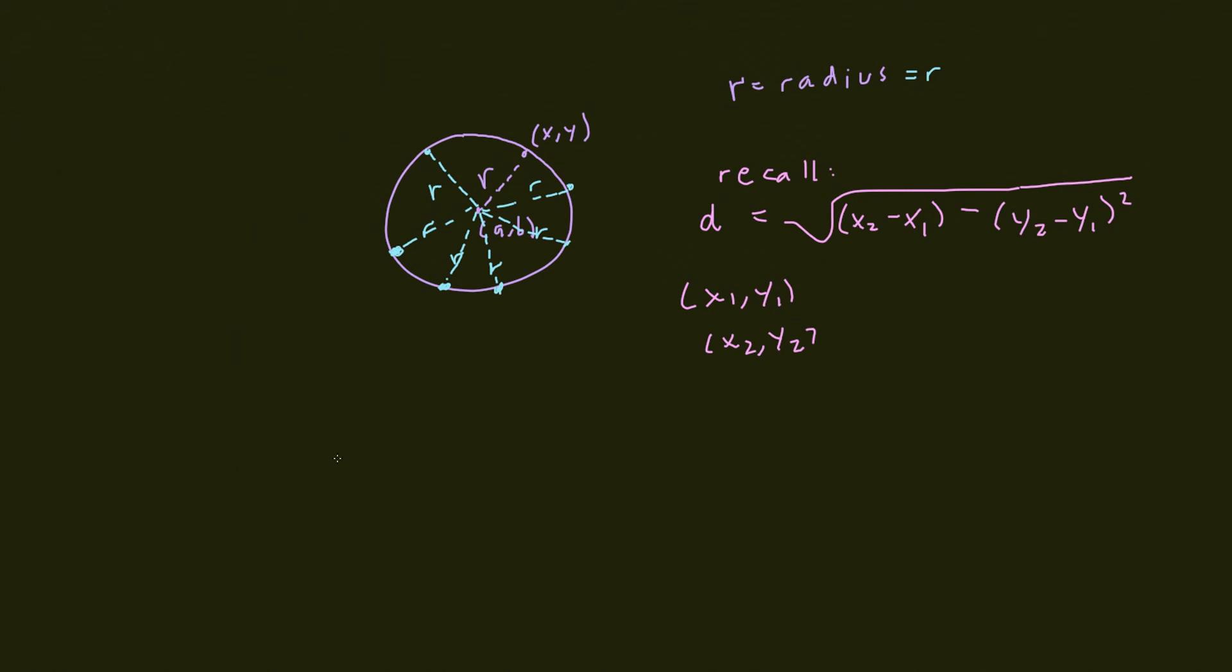Well, how do we apply it? Well, the distance here is just the radius, right? So we just write r in place of d. And then we also do this, and what do we see?